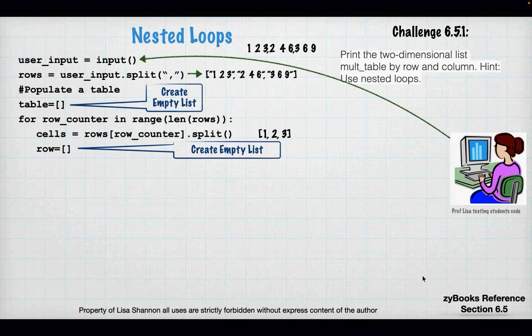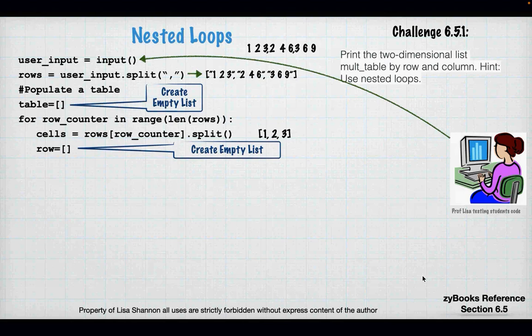For 6.5.1, the user enters '1 2 3, 2 4 6, 3 6 9'. First, split by comma to get three string elements in a single-dimensional list: '1 2 3' as a string, '2 4 6' as a string, and '3 6 9' as a string. Now I want to put this into a table — a multi-dimensional list.